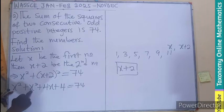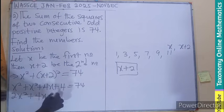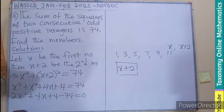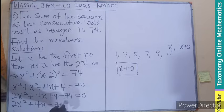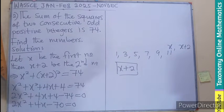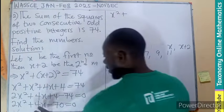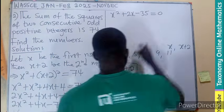Now we have X squared plus X squared as like terms. 1X squared plus 1X squared gives 2X squared, plus 4X plus 4. Transposing the positive 74 to become negative 74, leaving 0 on the other side, we get 2X squared plus 4X plus 4 minus 74 equals 0, which simplifies to 2X squared plus 4X minus 70 equals 0. Dividing through by 2 gives X squared plus 2X minus 35 equals 0.